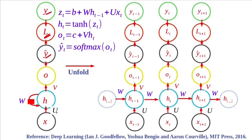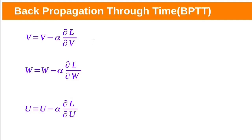The gradient descent algorithm will use backpropagation to calculate the gradients. Here, we have weights u, v, and w. So we must compute the gradient for our loss function with respect to these parameters u, v, and w. Gradient descent will update weights by using these rules to minimize the cost function. These three gradients will be calculated by using backpropagation.